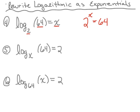Number five: log base x of sixty four equals two. First we need the base — the base this time is x. The exponent is two, and it equals the argument, which is sixty four. Therefore we end up with x squared equals sixty four.